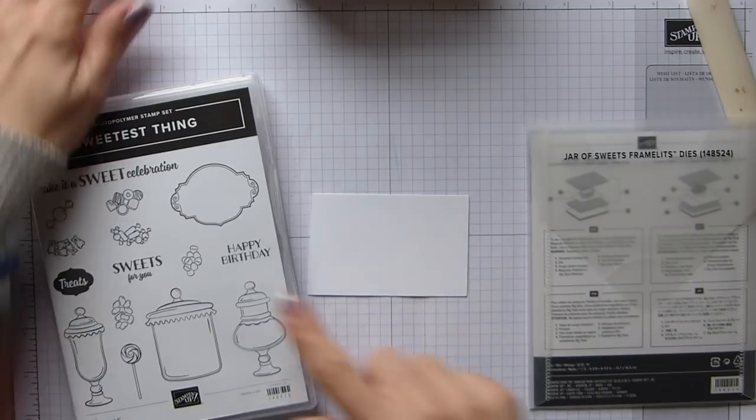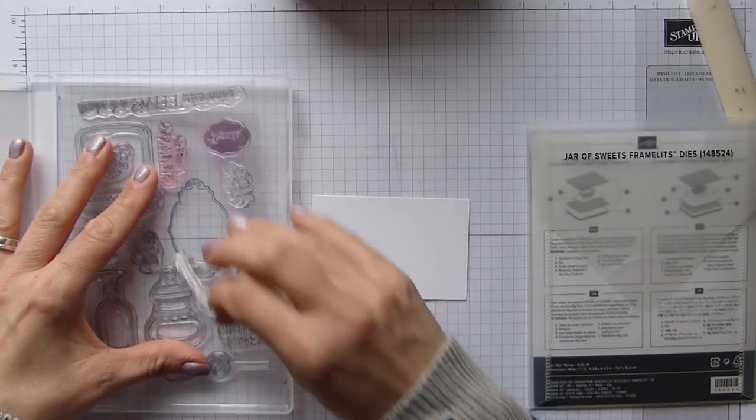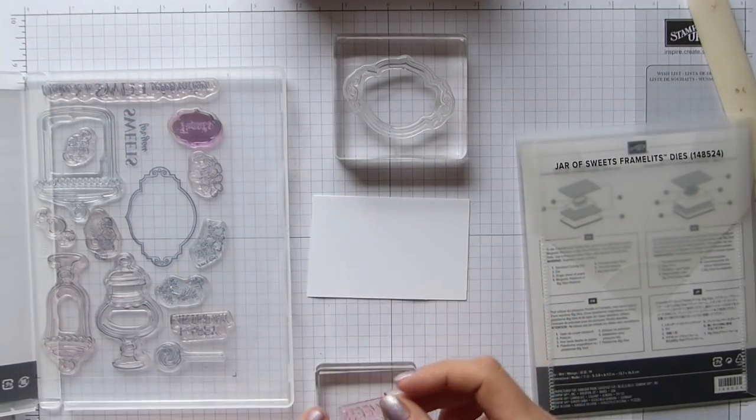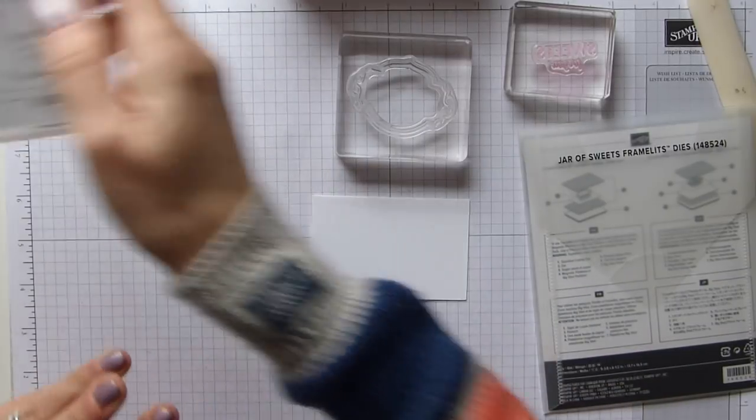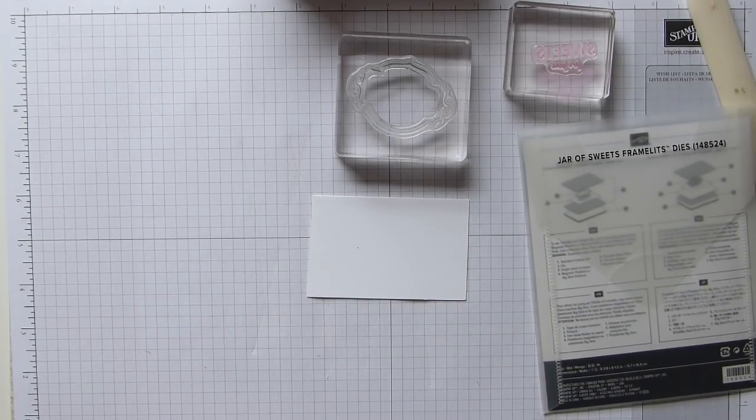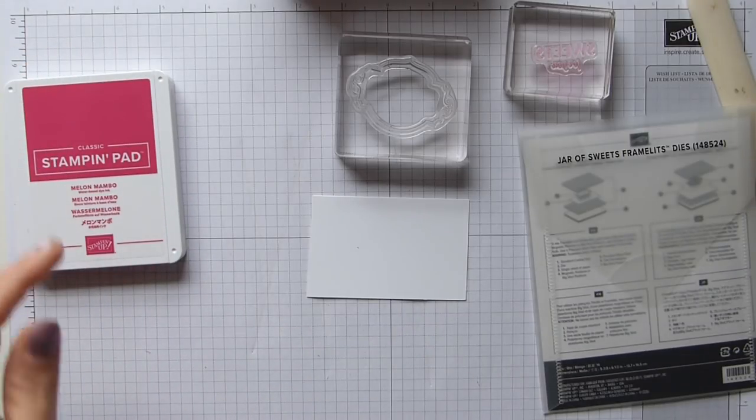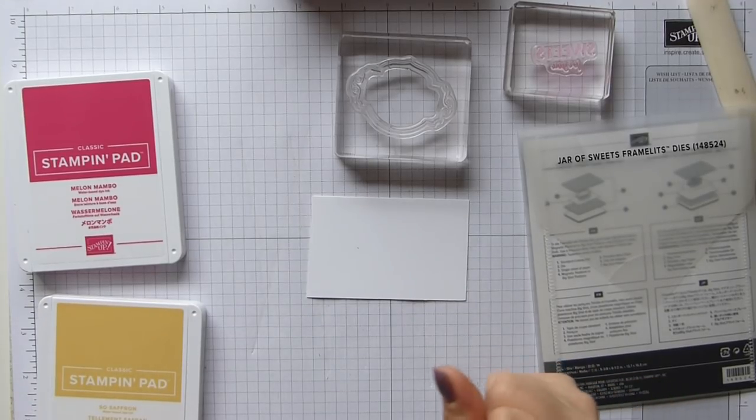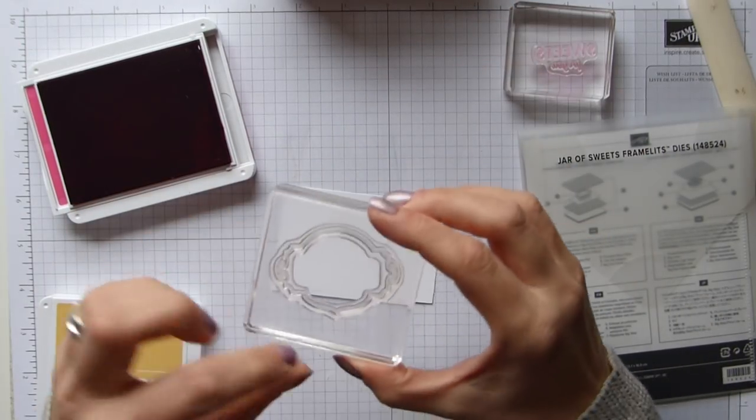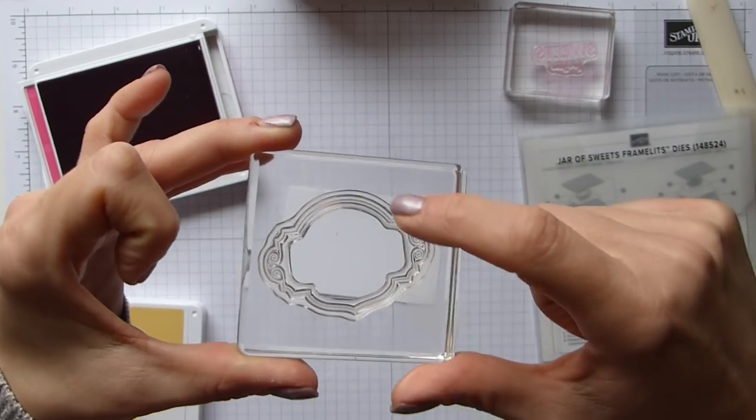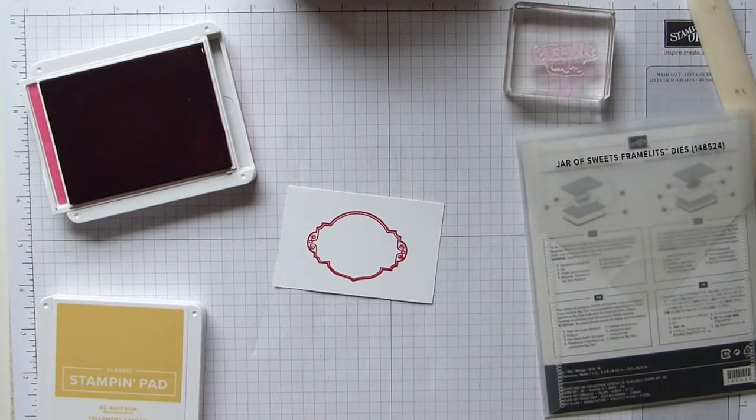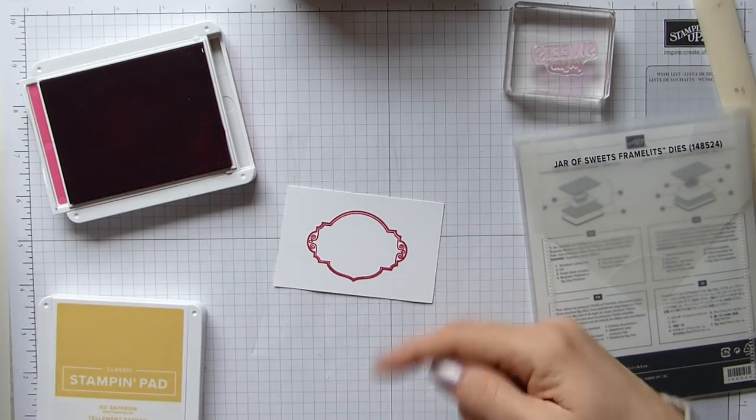Then I just need to do my decoration. So, as I say, I'm using Sweetest Thing. I have this beautiful frame here, and then I'm going with Sweets For You as a little stamp. Melon Mambo and So Saffron inks. I think I'm going to go Melon Mambo for the frame, I think. Just remember, I did this the first time and I didn't notice. There's a point at the bottom of this one and that's round. The first time I did it, I did it that way. It looks a bit silly. So just make sure if you are doing this one, that you keep your point to the bottom if you're adding words. Don't make the mistake either.